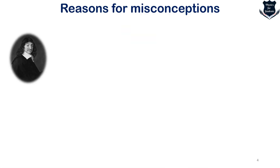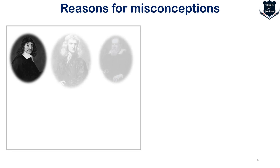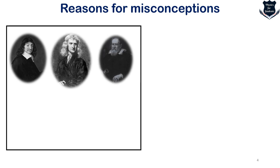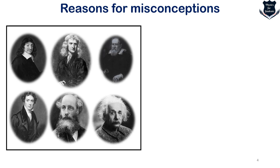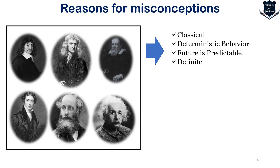Now if you look into the world of determinism starting from René Descartes, then going up to Isaac Newton, Galileo, then Maxwell, Albert Einstein and others — what this determinism actually tells us is that it has got a deterministic behavior, our future is definitely predictable and all the calculations are something very definite.